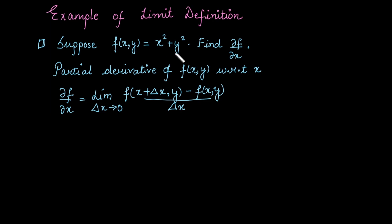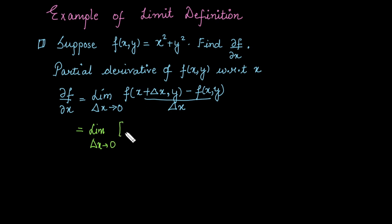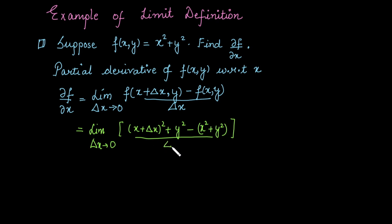The function at (x, y) is equal to x squared plus y squared. Now, the function at (x + delta x, y) is obtained by replacing x with x plus delta x, where y remains as it is. This can be written as the limit as delta x approaches 0 of: the function at that point is (x + delta x) squared plus y squared, minus f(x, y) which is x squared plus y squared, all divided by delta x.